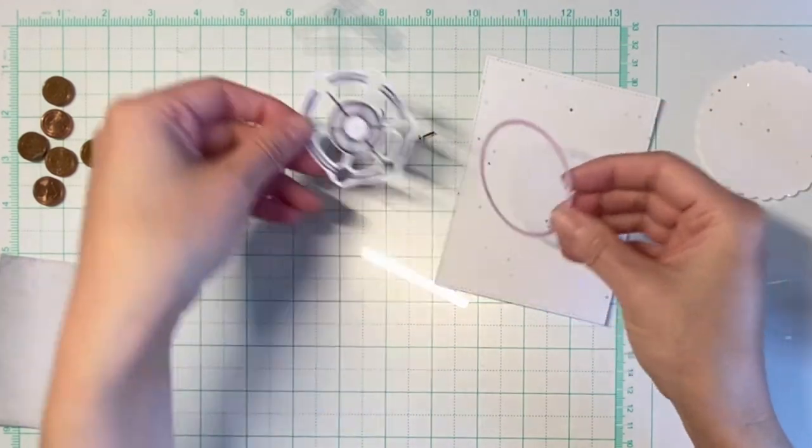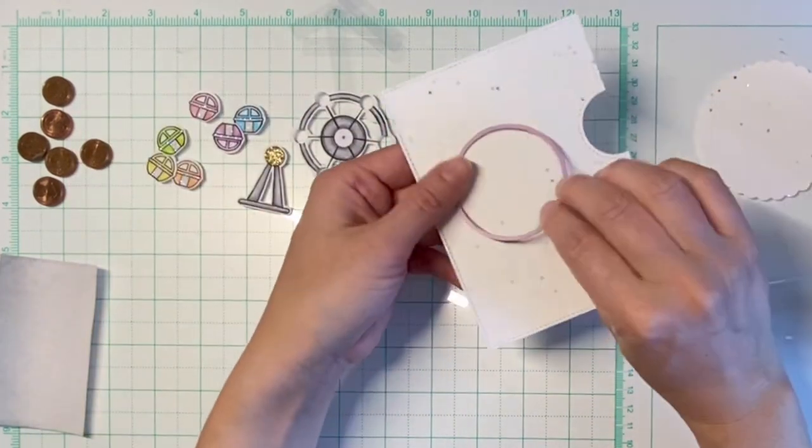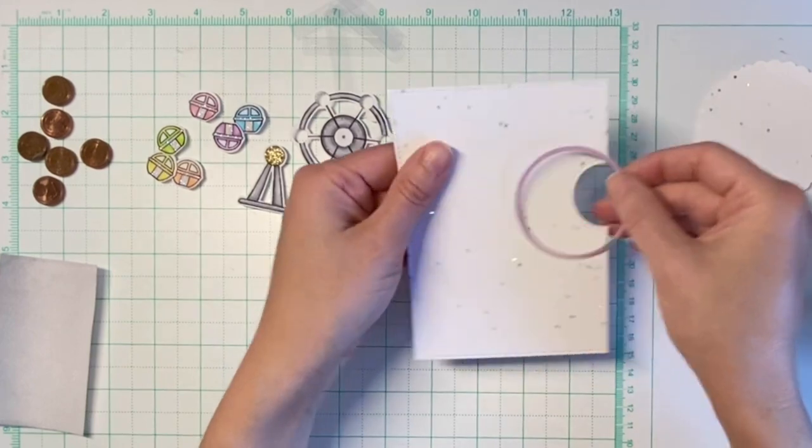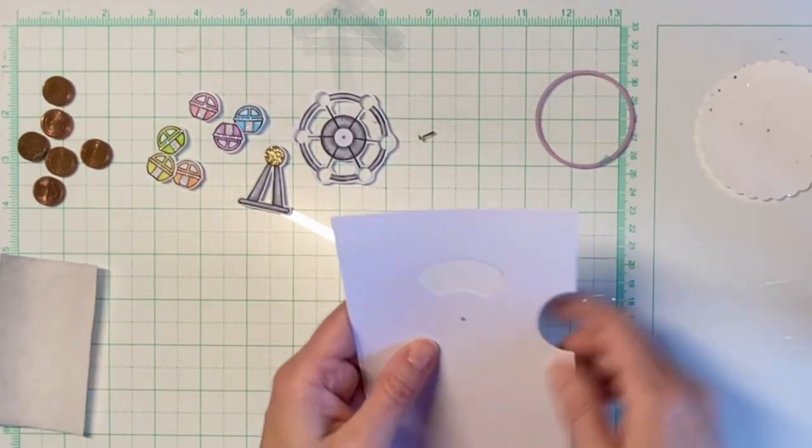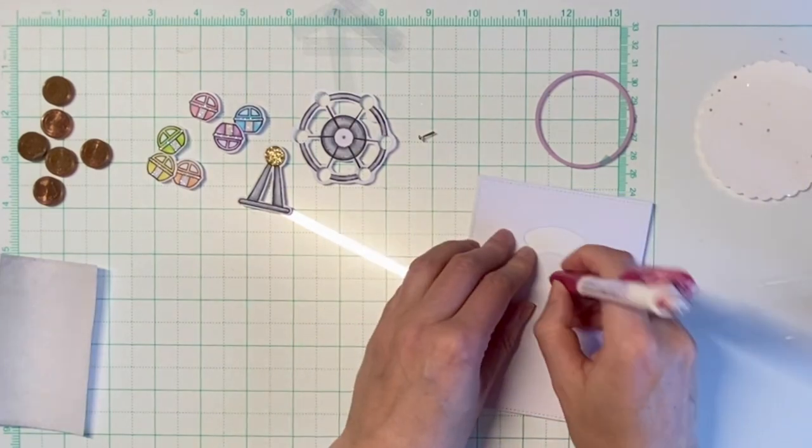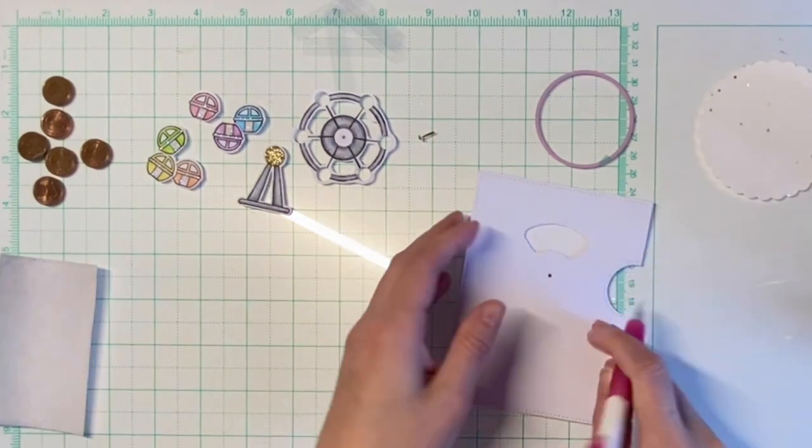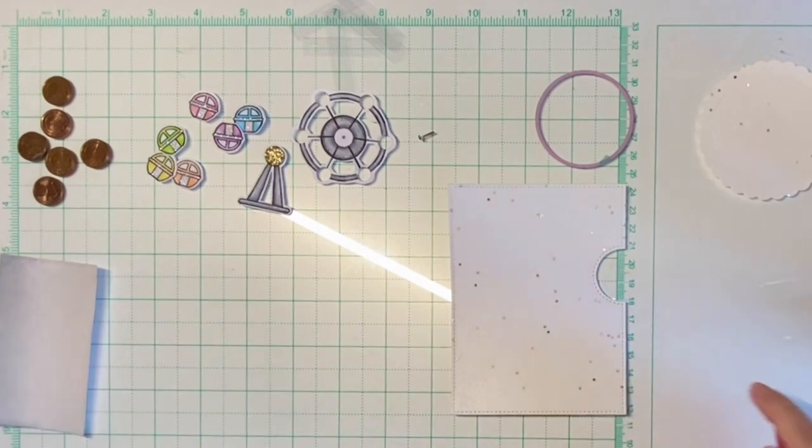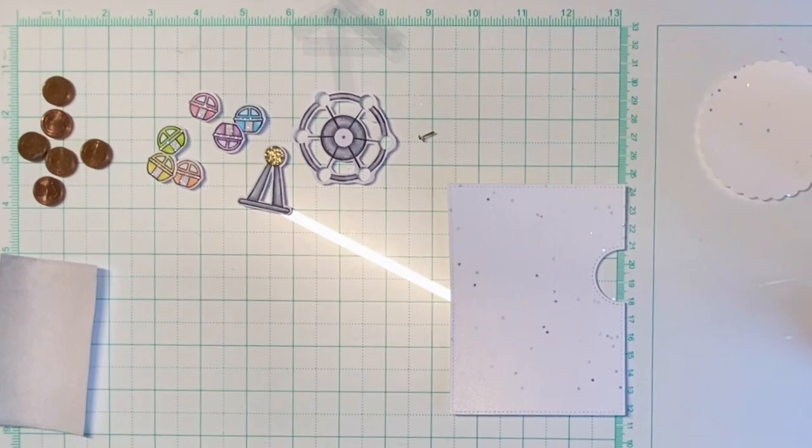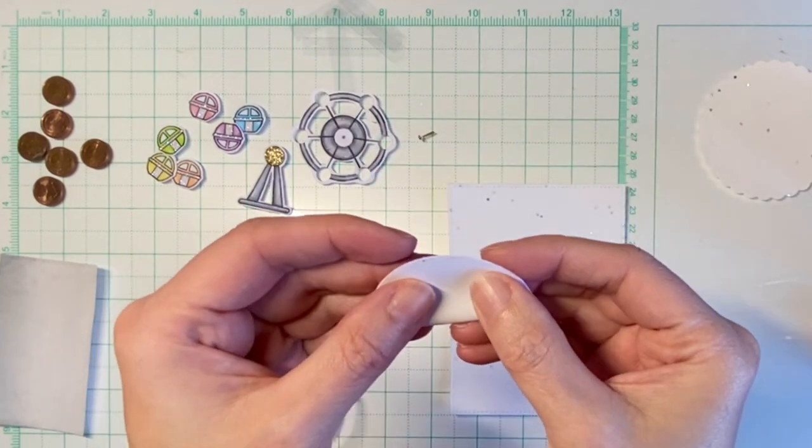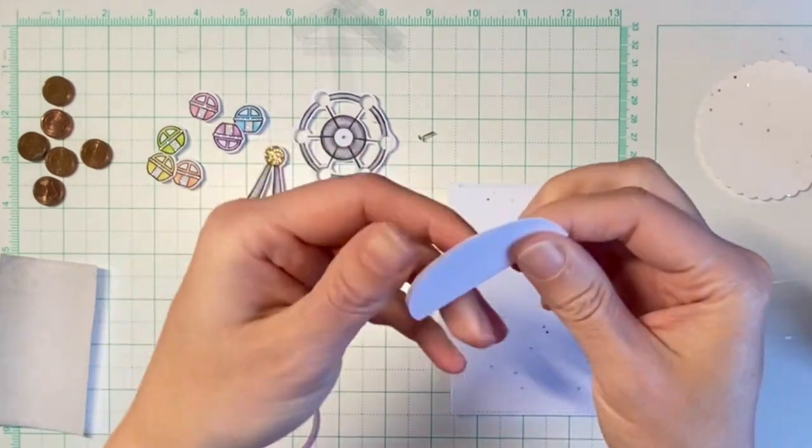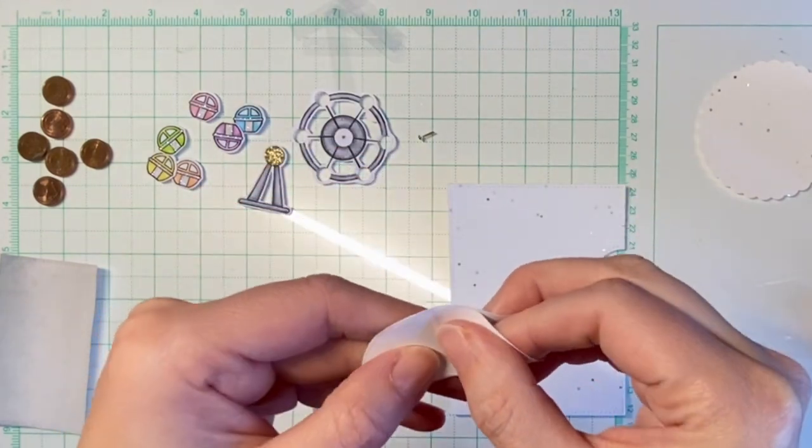So I chose a circle die that was as close as possible to the required size. To find the correct position, I marked the center using my template. You can find a tutorial on how I created that template and its original purpose on my channel. To perfectly align my circle die in the center, I die cut a circle from copy paper.